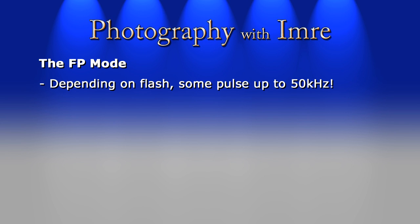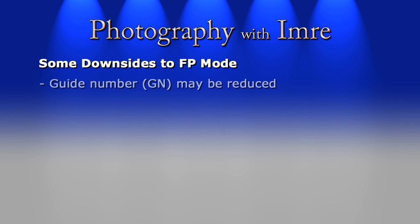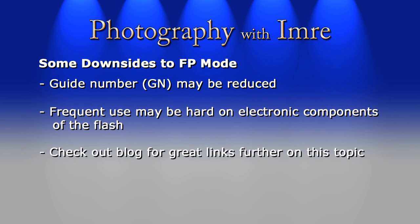Check out my blog for more info about this. Even at 1,200 frames per second, my high-speed video camera couldn't separate those individual pulses — all we see is a pre-flash, which the camera uses to calculate the correct power output for a proper exposure, and then the second brighter flash where the high-frequency pulsing occurs. Basically it looks like one big flash of light. There are some downsides to using the flash in this mode: the guide number of the flash is generally reduced, and using FP mode may be hard on the electronic components of the flash.